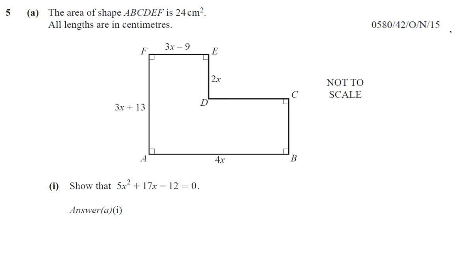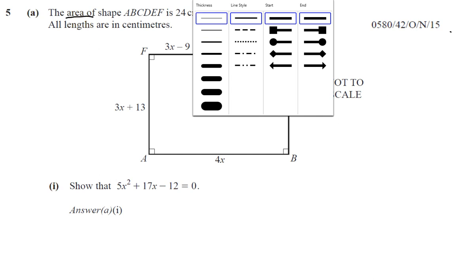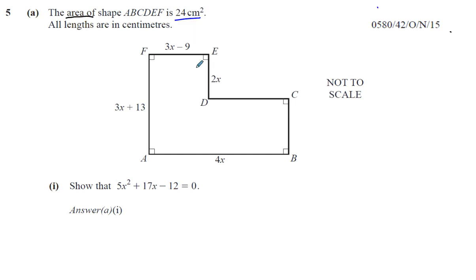The area of the shape ABCDEF is 24 square centimeters. So the area of this whole shape is 24 square centimeters. All lengths are in centimeters. Show that 5x squared plus 17x minus 12 equals 0.